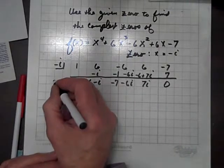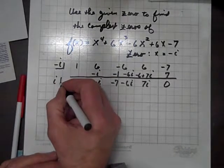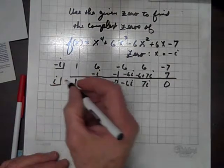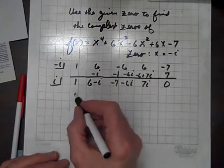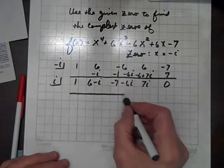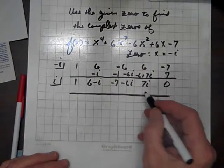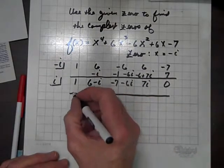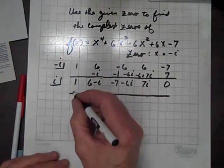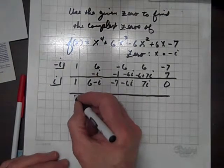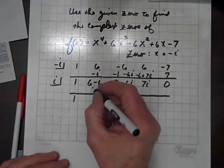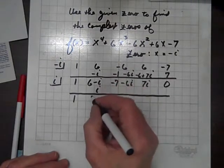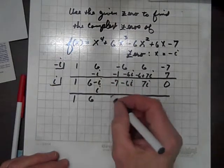So, since negative i is a zero, then i is also a zero, and we know we're going to get a zero in the remainder position, but let's go through our synthetic division. Bring down the 1, multiply times i, and we get i. Add these up, and we get 6, the i's add out.